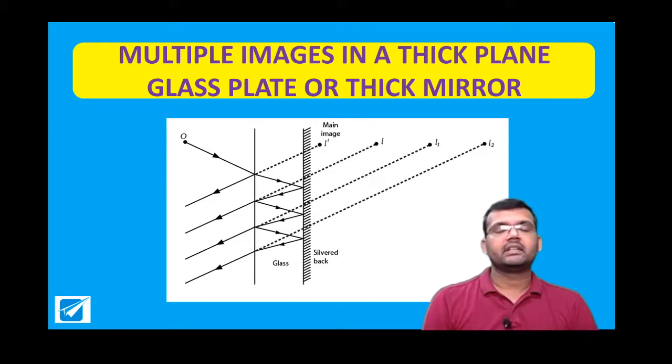So in a mirror, on the first surface, you have refraction. On the second surface, you have complete reflection. So let us try to understand.